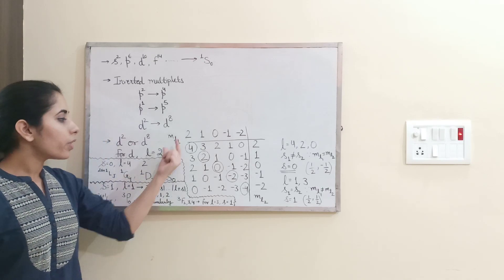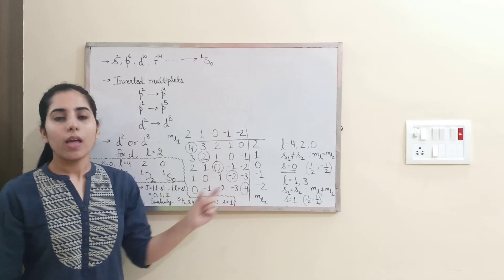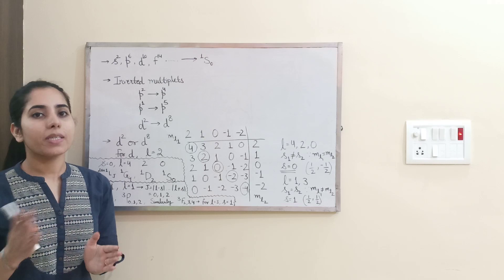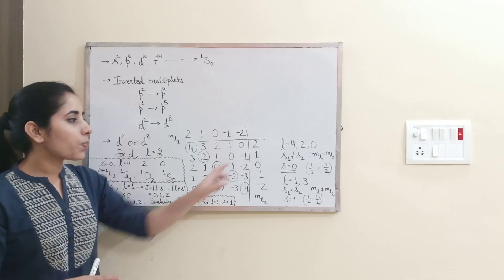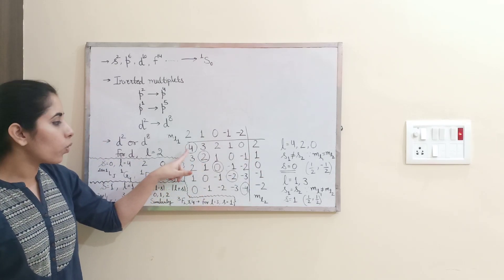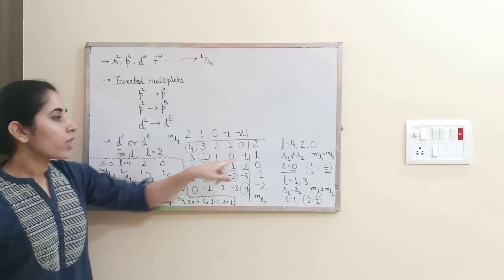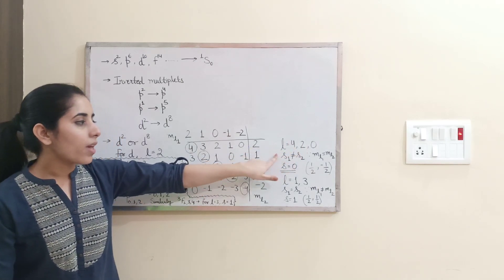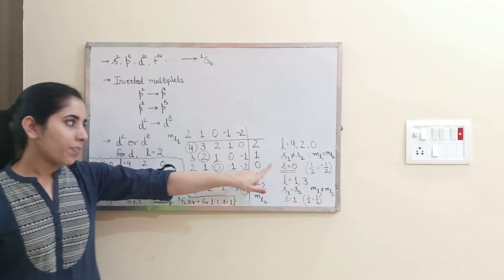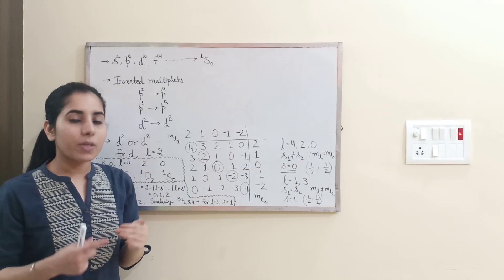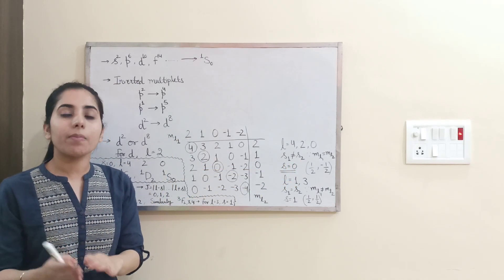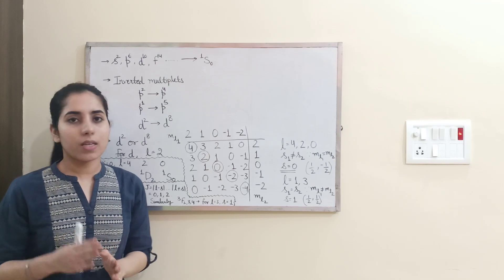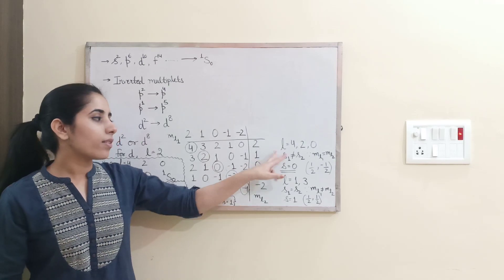Next thing. So for diagonal values, the ML1 and ML2 will be same. So in that case, spin should be different. Diagonally, we are having 4, 2 and 0. Clear? So for 4, 2 and 0, S1 and S2 will not be same because ML1 and ML2 are same. Just to satisfy the Pauli's exclusion principle, we do it in this way.